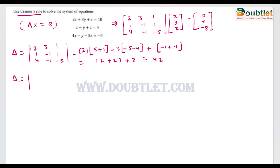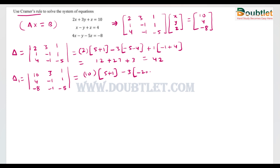Now we calculate delta 1. In delta 1, we replace the first column with column matrix B [10, 4, -8], keeping the remaining columns [3, -1, -1] and [1, 1, -5]. Expanding by the first row: 10×(5+1) − 3×(−20+8) + 1×(−20+8) gives 60 − (−36) + (−12), so delta 1 = 96 − 12 = 84.